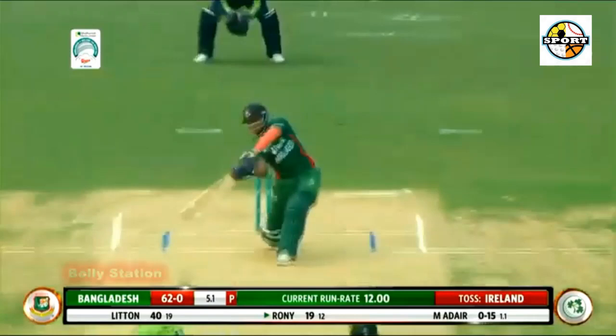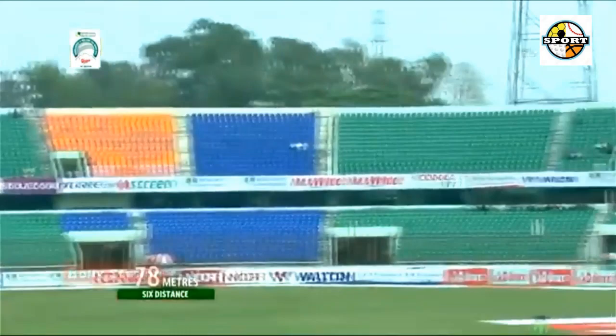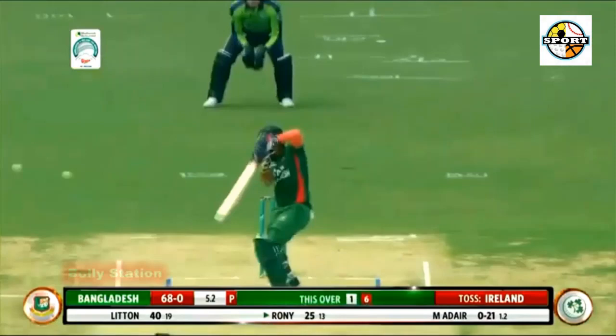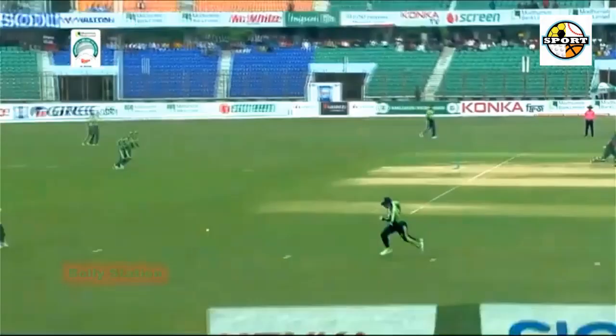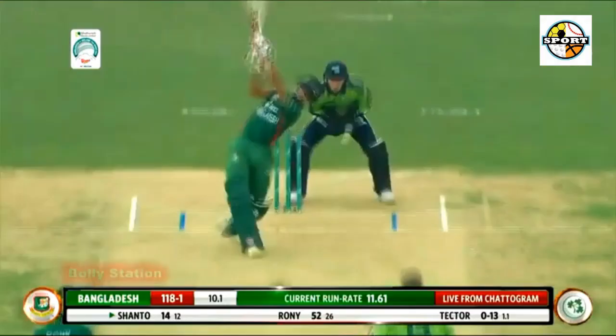Benjamin Wide to Shamim Hossein — 6! Full on leg stump, can't pull there. Shamim Hossein sweeps and deliberately hits it in the air over deep backward square leg and all the way — hit powerfully. Then Benjamin Wide to Rony Talukdar — 6! Second six of the over. A length leg break around off, Rony Talukdar gets forward and hoicks it over deep mid-wicket. Sails away.